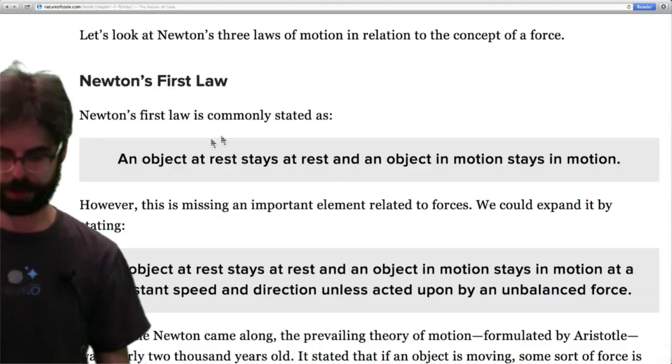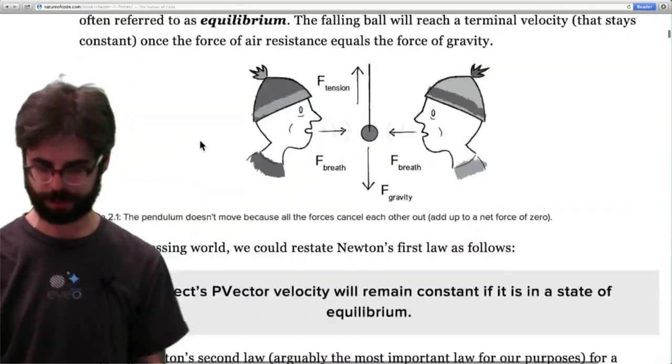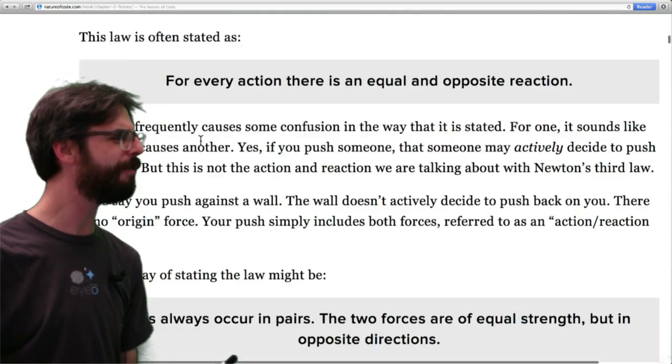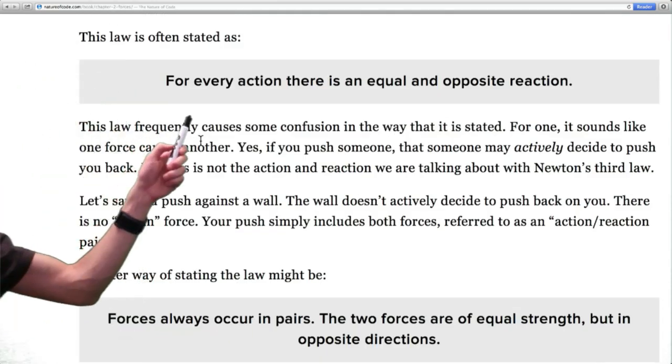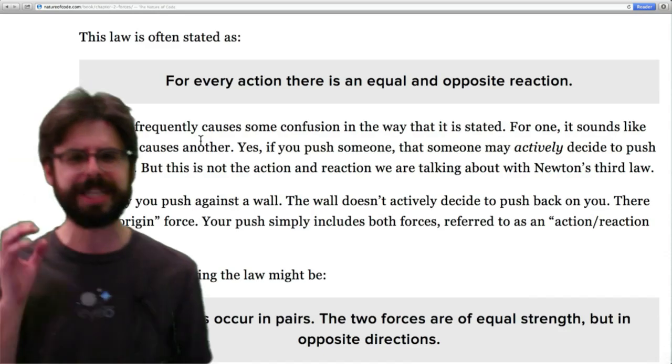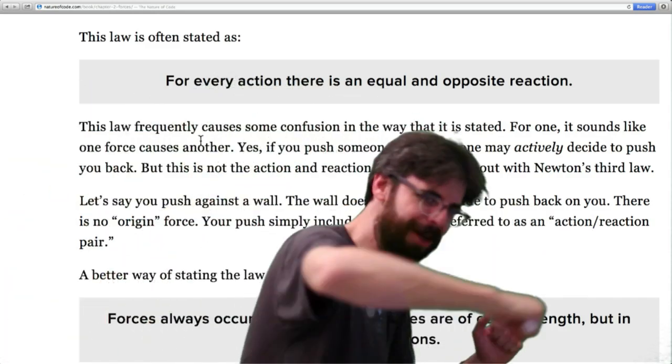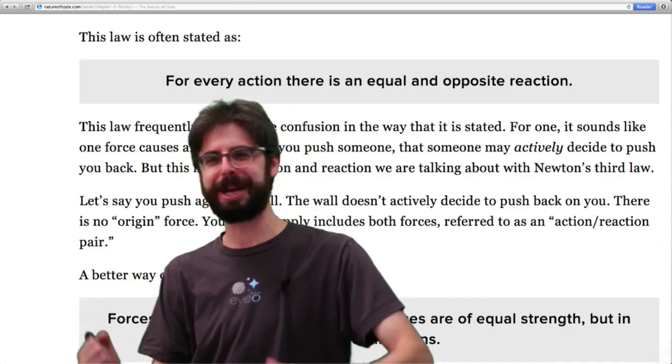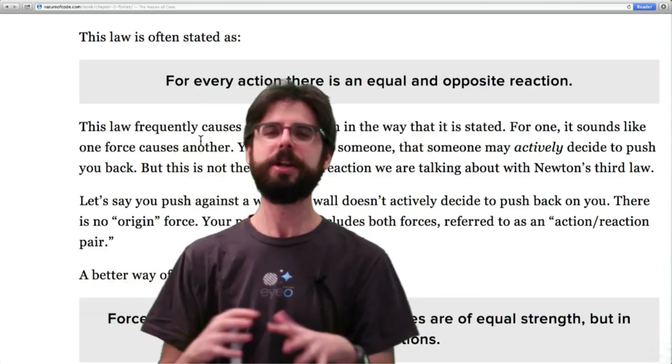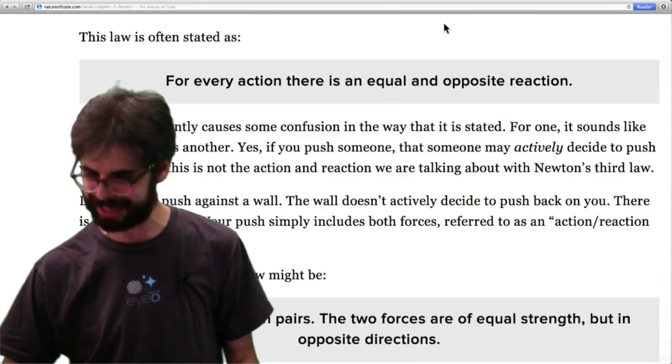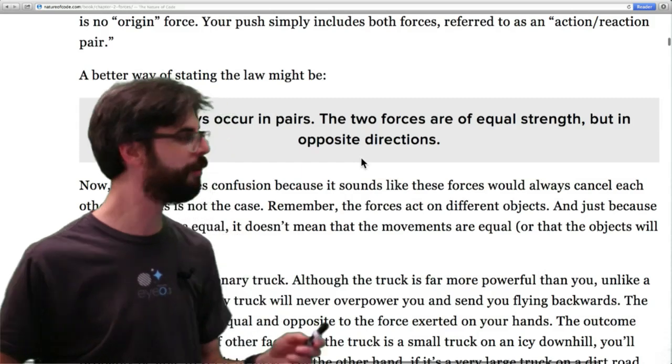Now, Newton's law number three, I'm going to do out of order. Newton's law is often stated this way: For every action, there is an equal and opposite reaction, but this is a bit misleading. It sounds like if I punch you, then your opposite reaction is equal, and you punch me back. No, this is not really how things work. A better way of stating this is the following: Forces always occur in pairs. The two forces are of equal strength, but in opposite directions.